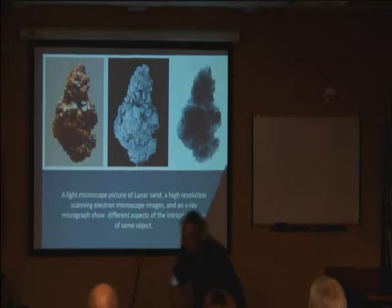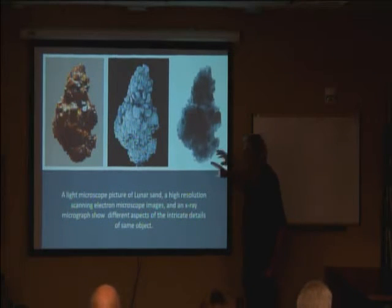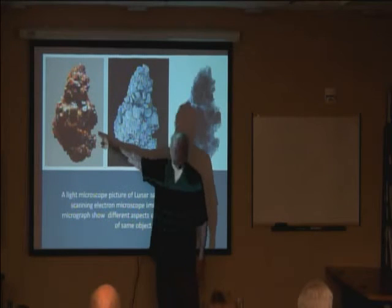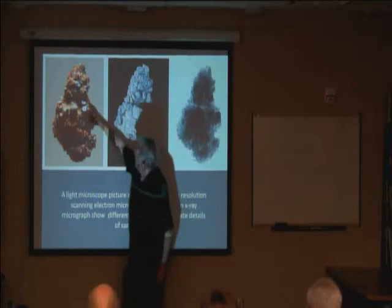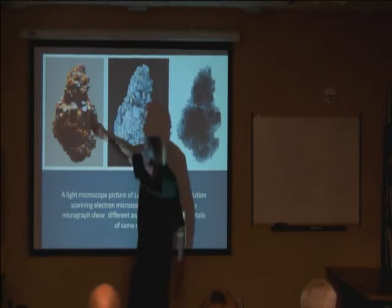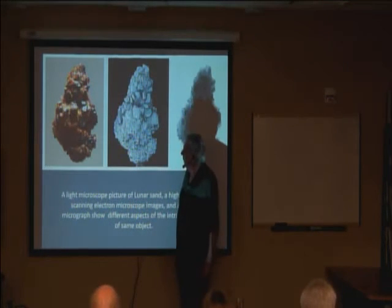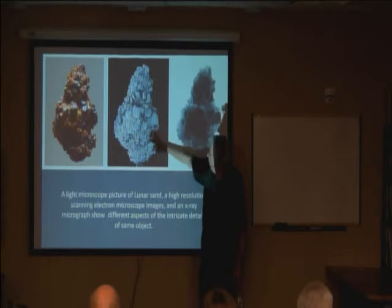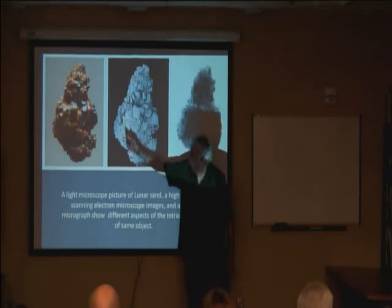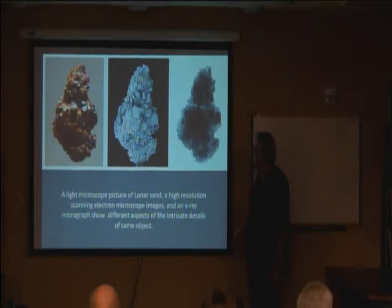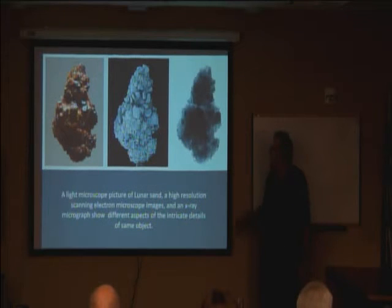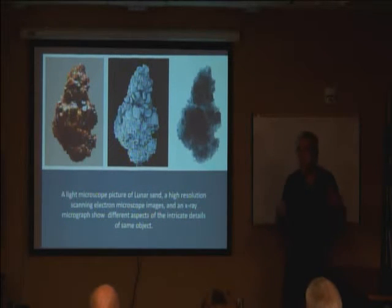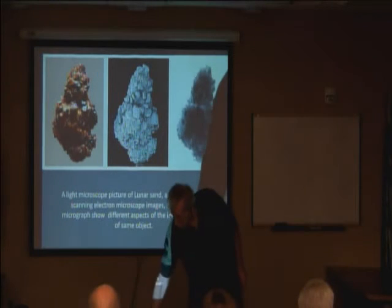It shows you that what you see depends on how you look at things. This is a grain of sand from the moon, photographed with one of my 3D light microscopes. You can see some of the grains have colors in them. Looking with a scanning electron microscope at the exact same grain, you see incredible detail in the surface structure but don't see the luminescence and other properties. And here's the same grain with an x-ray microscope — looking through the grain, seeing things you couldn't possibly see from the inside.